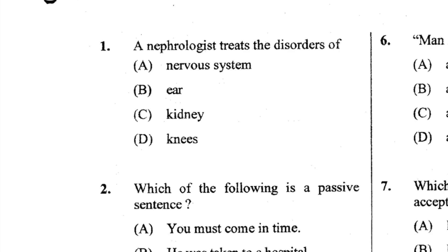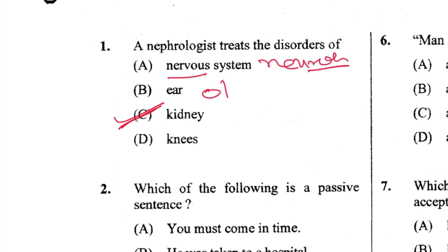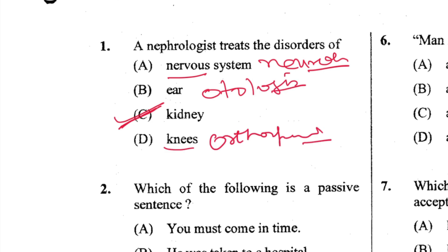Question 1: A nephrologist treats disorders of the kidney — nephrology is the study of the kidney. C is the answer. A neurologist treats the nervous system, an otologist treats the ear, and a paediatrician treats children.